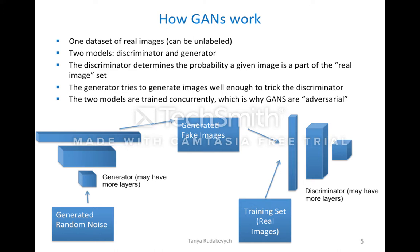So how do GANs work? With GANs, you have a generator network and a discriminator network. You take one dataset of real images — it can be unlabeled — and you have a discriminator and a generator. The discriminator determines the probability that the input image is part of the real image set, which is the training set. The generator tries to generate images well enough to trick the discriminator, and the two models are trained concurrently, which is why GANs are adversarial. The generator tries to create better images to fool the discriminator, and the discriminator tries to get better at recognizing fake versus real images. The combined loss function is a composite of both the generator and the discriminator loss.